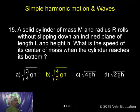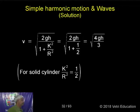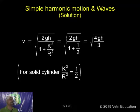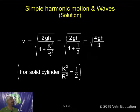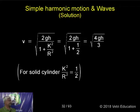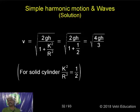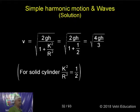There is a formula given: V is equal to the square root of 2GH divided by (1 plus K squared by R squared). Simply substitute the values — K squared by R squared equals one half for a solid cylinder — giving V equal to the square root of 4GH by 3.